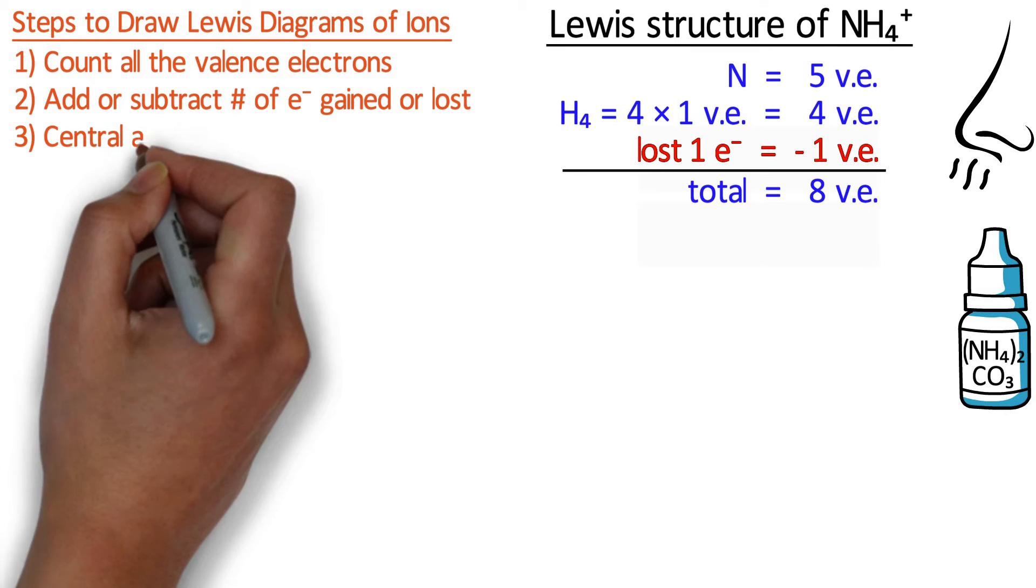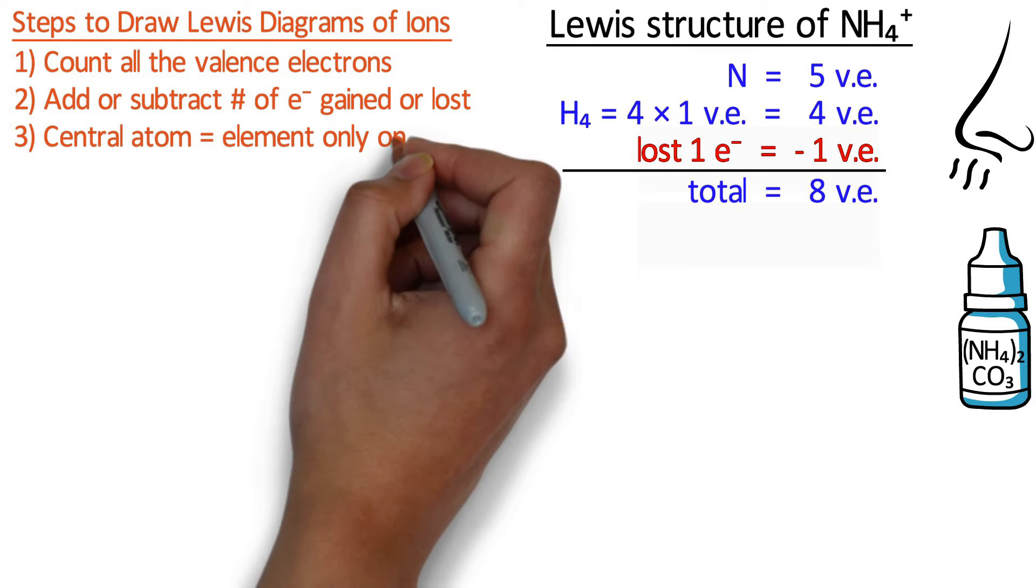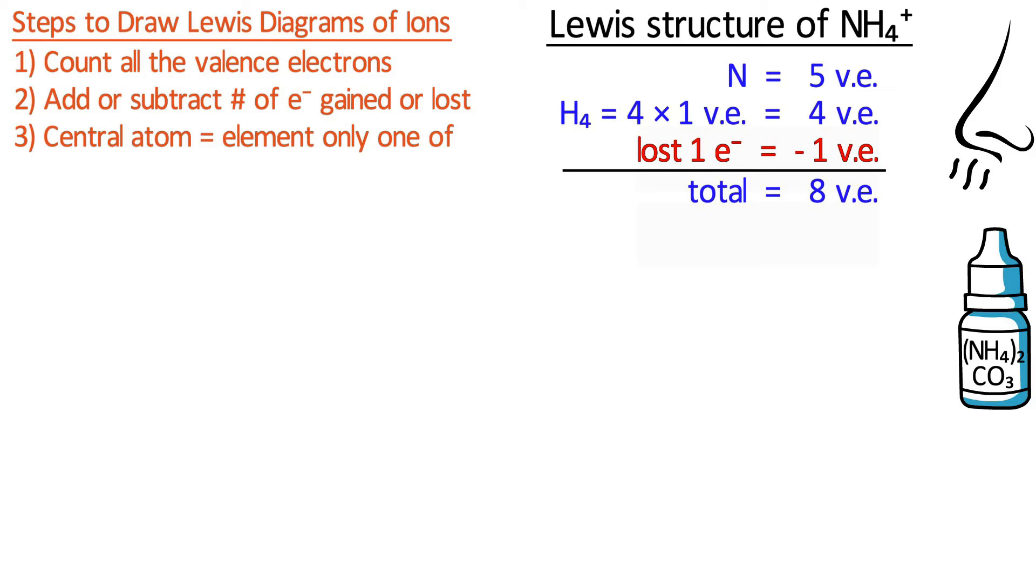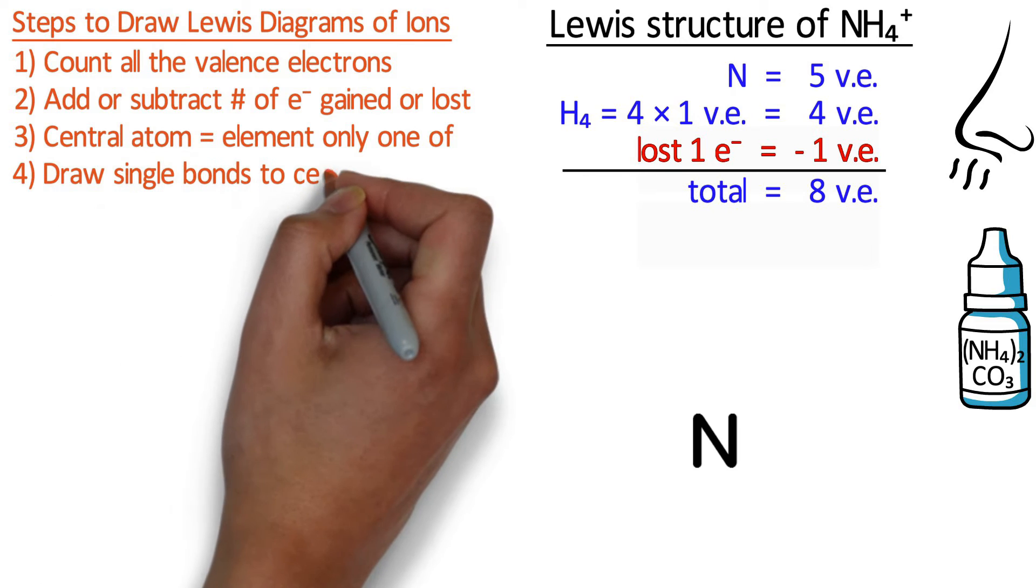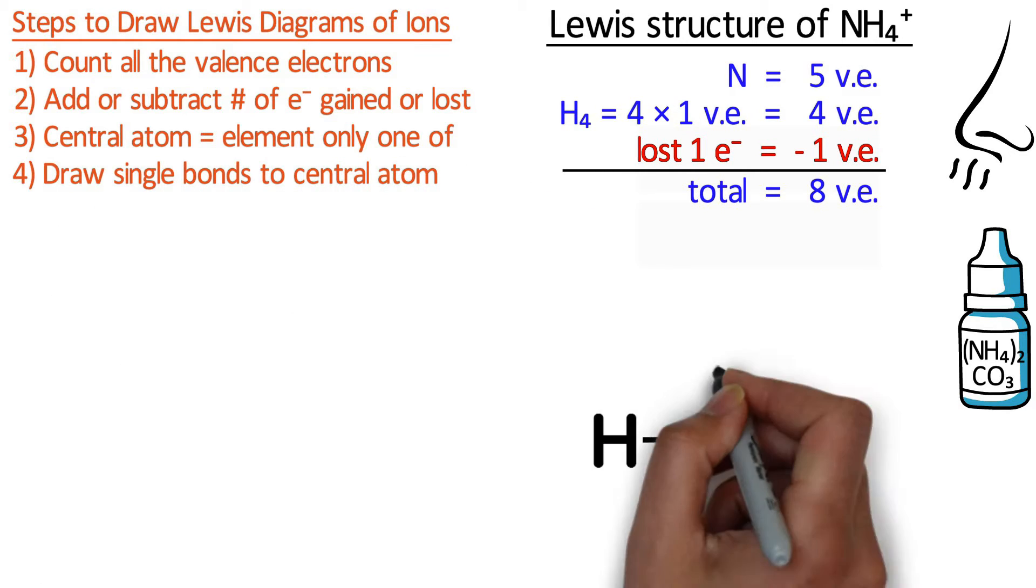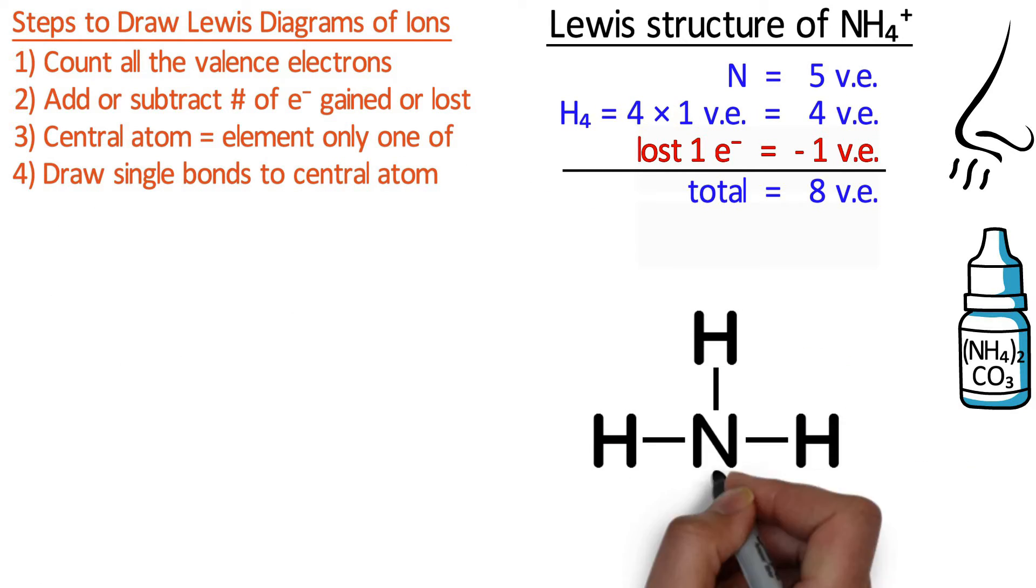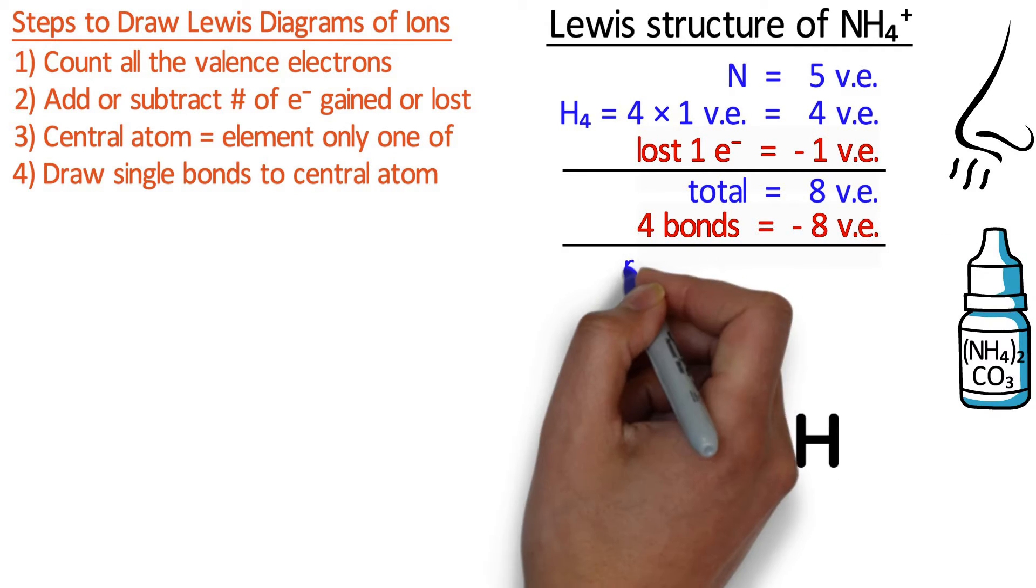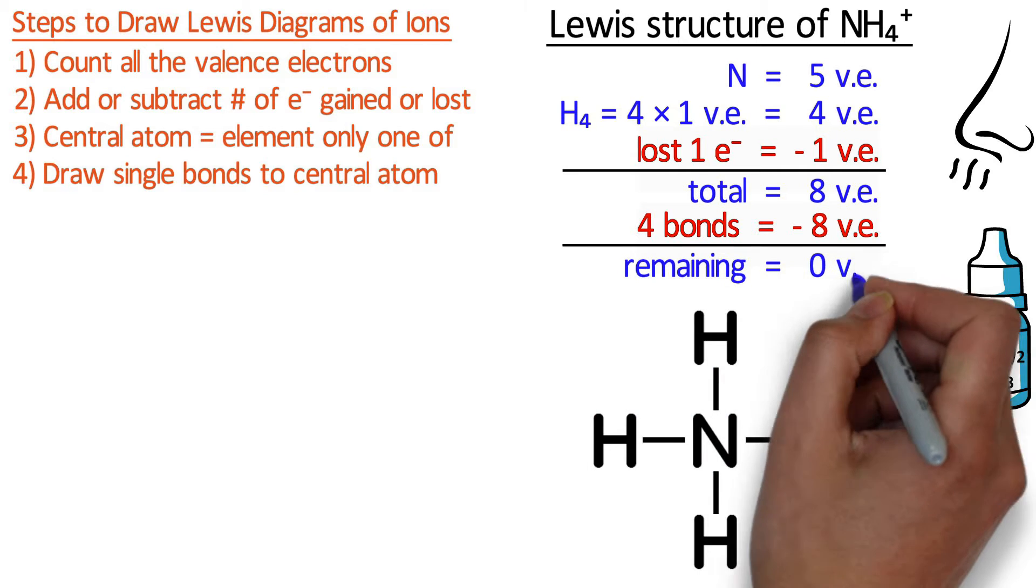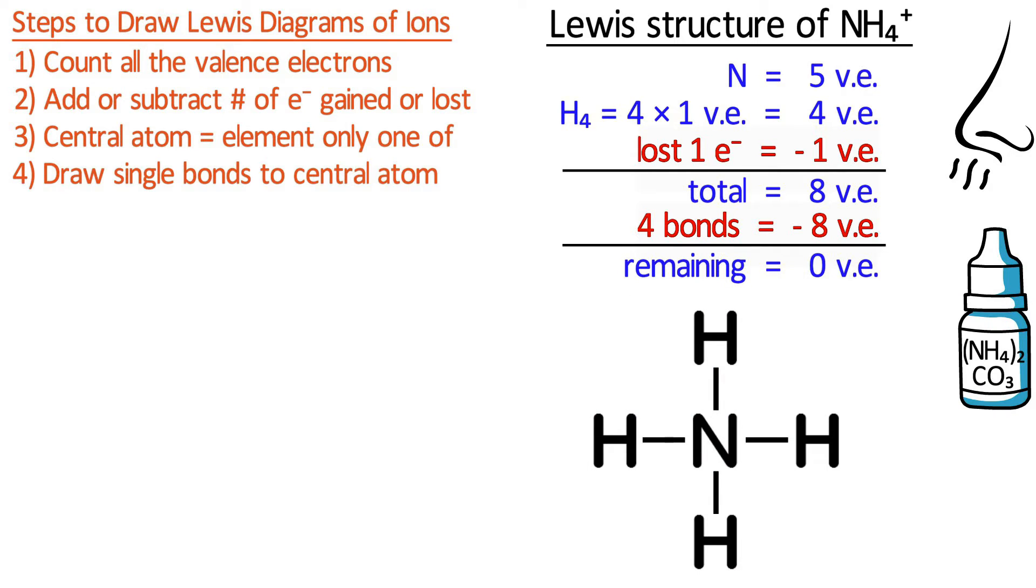Next, the central atom is typically the element that there is only one of, or the element that tends to form the most bonds, which in this case is nitrogen. After that, draw single bonds between the central atom and the other atoms. Since each bond is the sharing of two electrons, we have used eight valence electrons to form single bonds. There are no more electrons for lone pairs or double bonds. That means that this is the correct structure of ammonium.